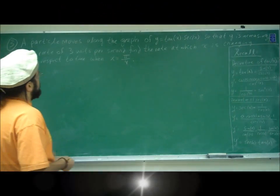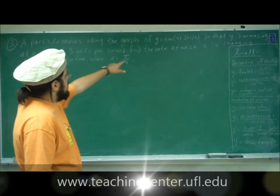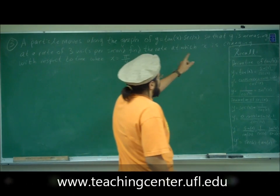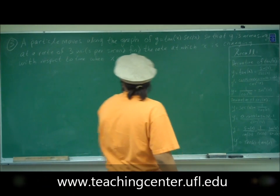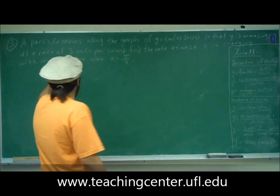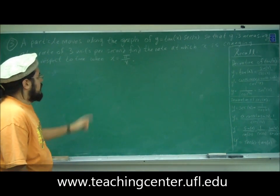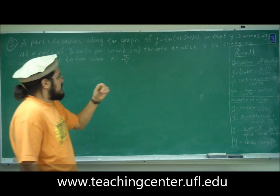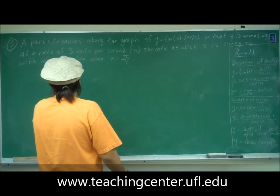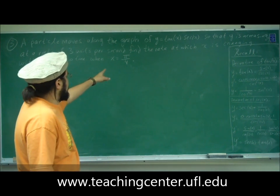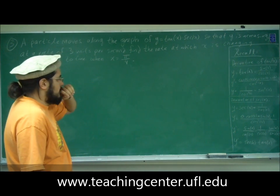A particle moves along the graph of y equals tangent of x times secant of x, so that y is increasing at a rate of 3 units per second. Find the rate at which x is changing with respect to time when x is equal to pi over 4.